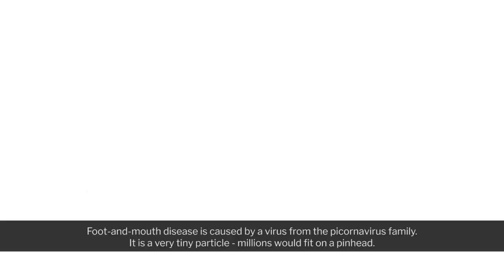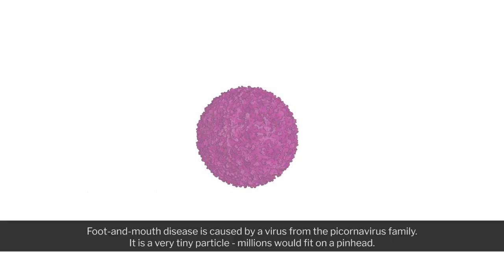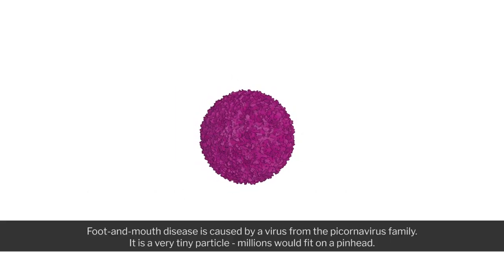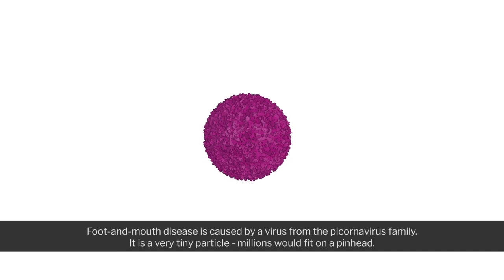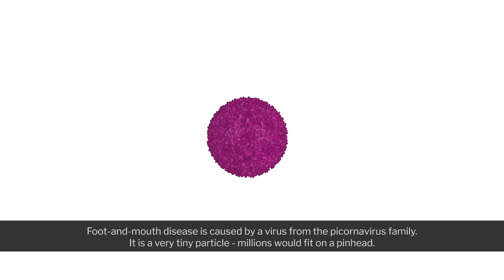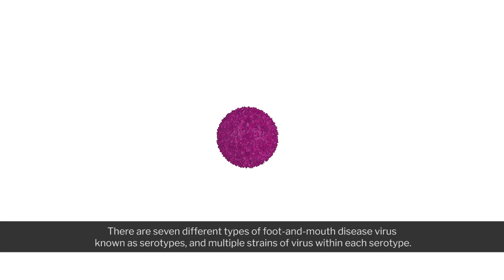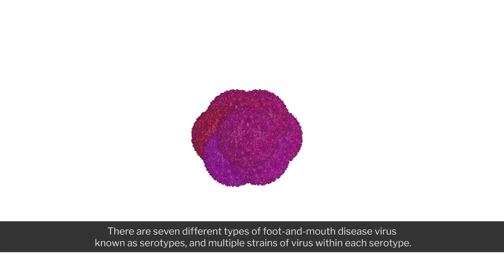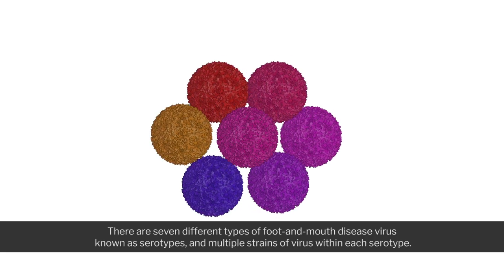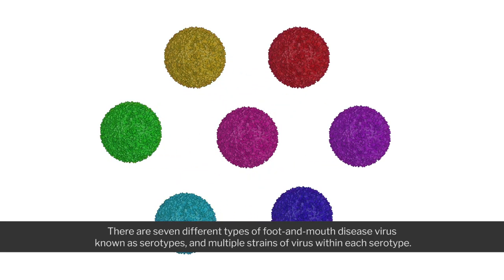Foot and mouth disease is caused by a virus from the picornavirus family. It is a very tiny particle — millions would fit on a pinhead. There are seven different types of foot and mouth disease virus, known as serotypes, and multiple strains of virus within each serotype.